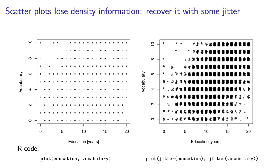But if we add a little bit of noise, statisticians call this process jittering, then the density in the data become more apparent.